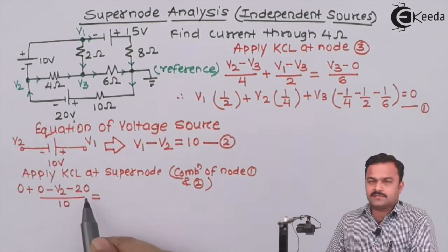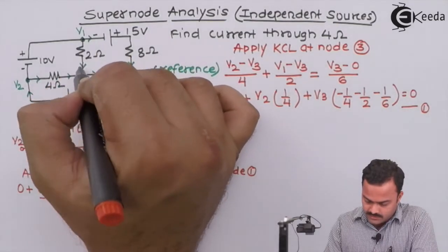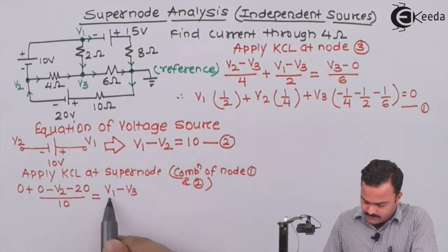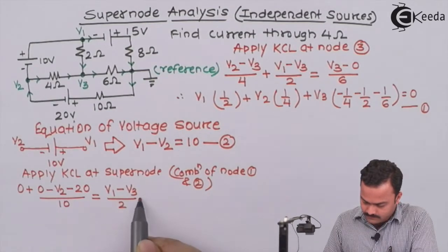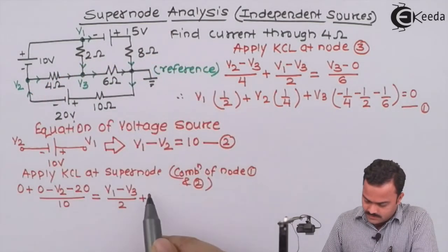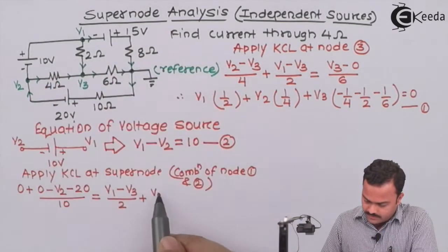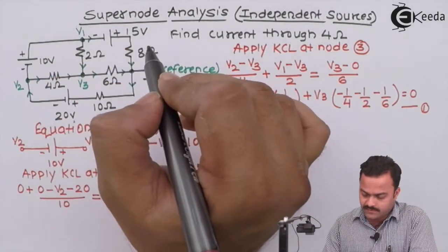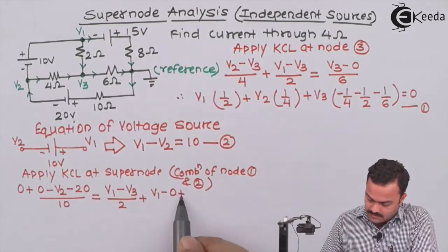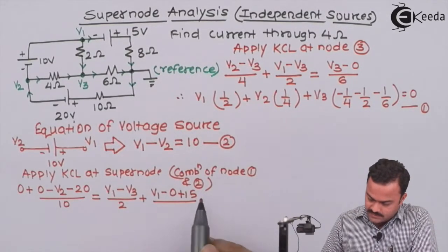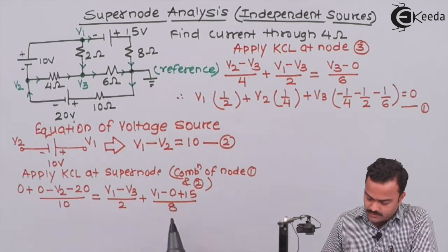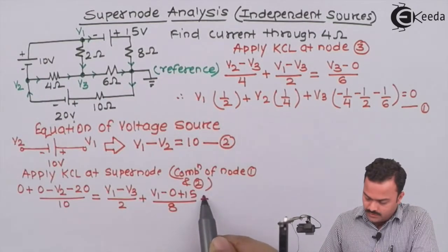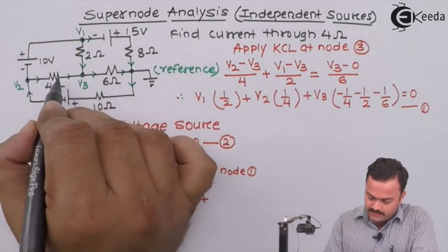Let's write outgoing current now. For node 1, this is outgoing current: V1 minus V3 upon 2. Plus this is also outgoing current: V1 ending on reference. In the current direction, minus 2 plus is the voltage, which is a voltage rise, so plus 15, resistance of that branch is 8 ohm. Now for this node, node number 2, the outgoing current is V2 minus V3 divided by 4.